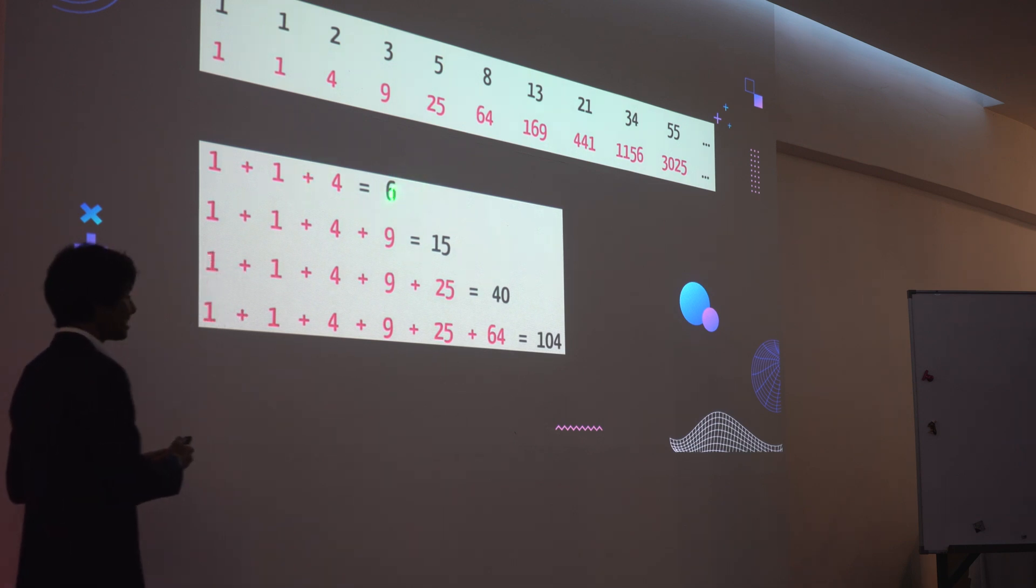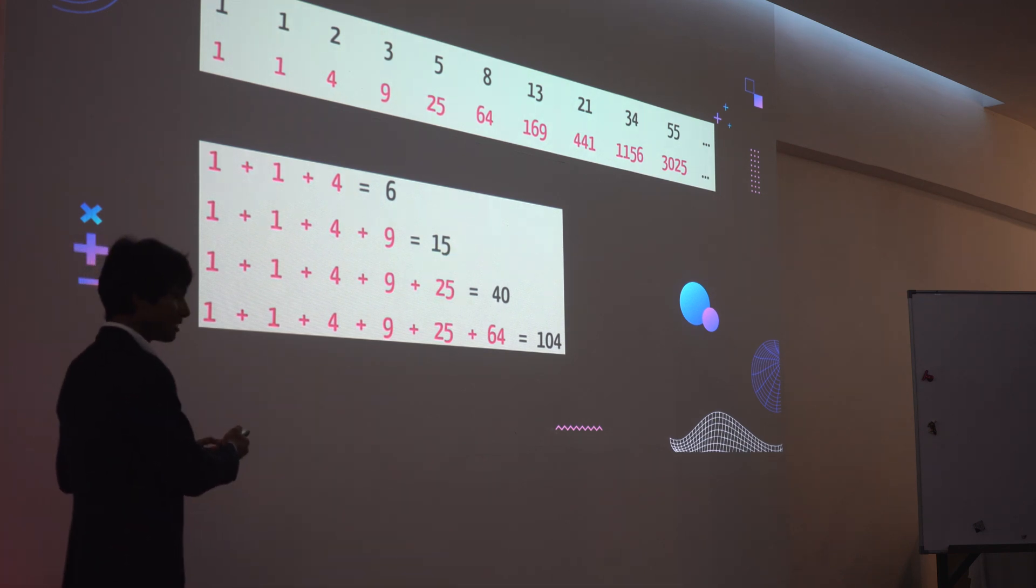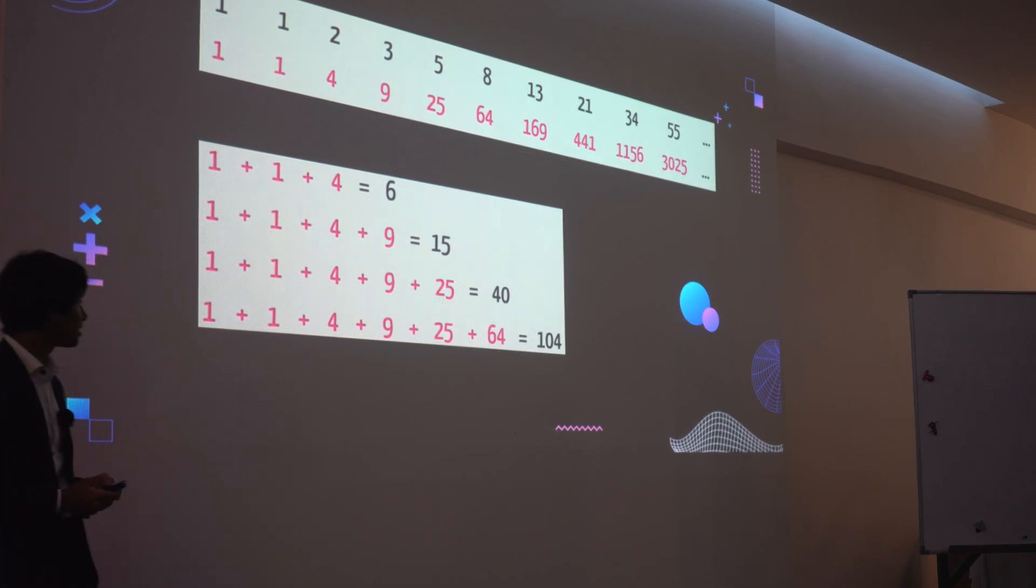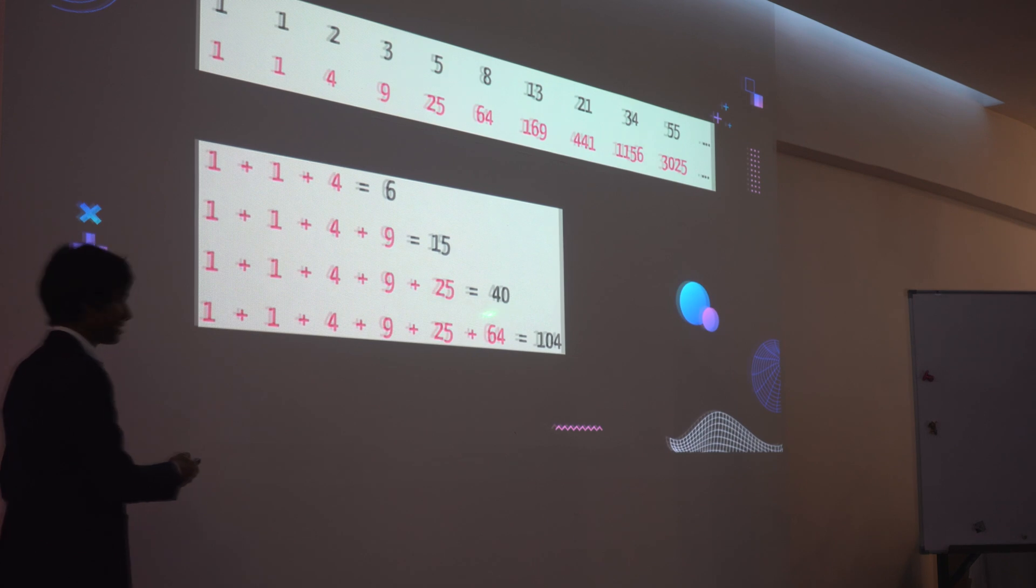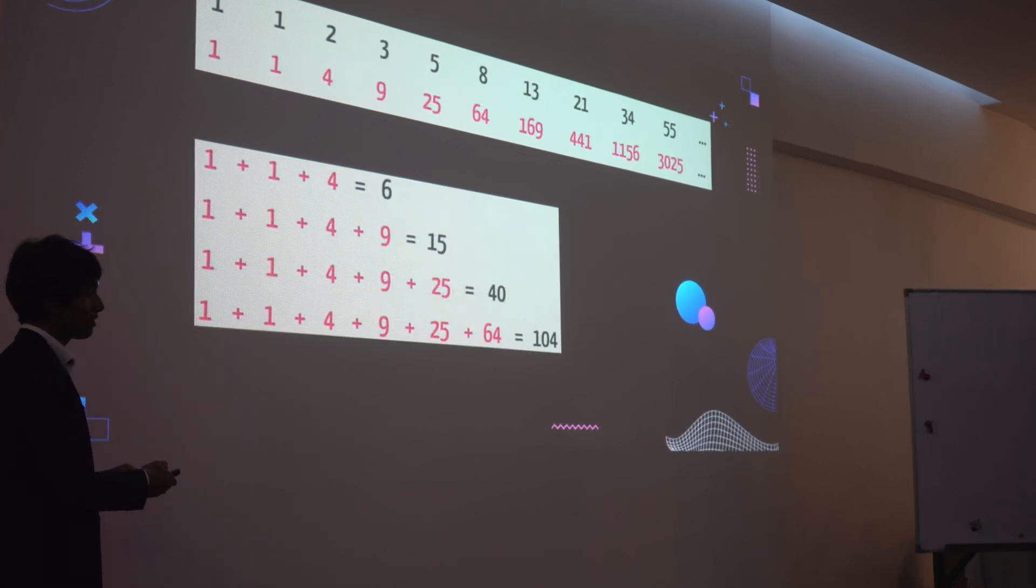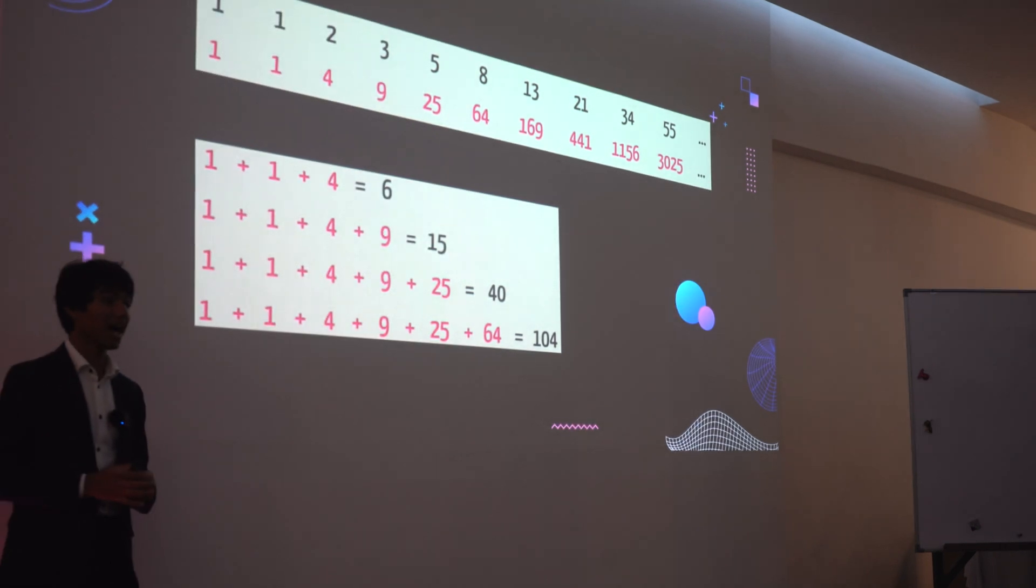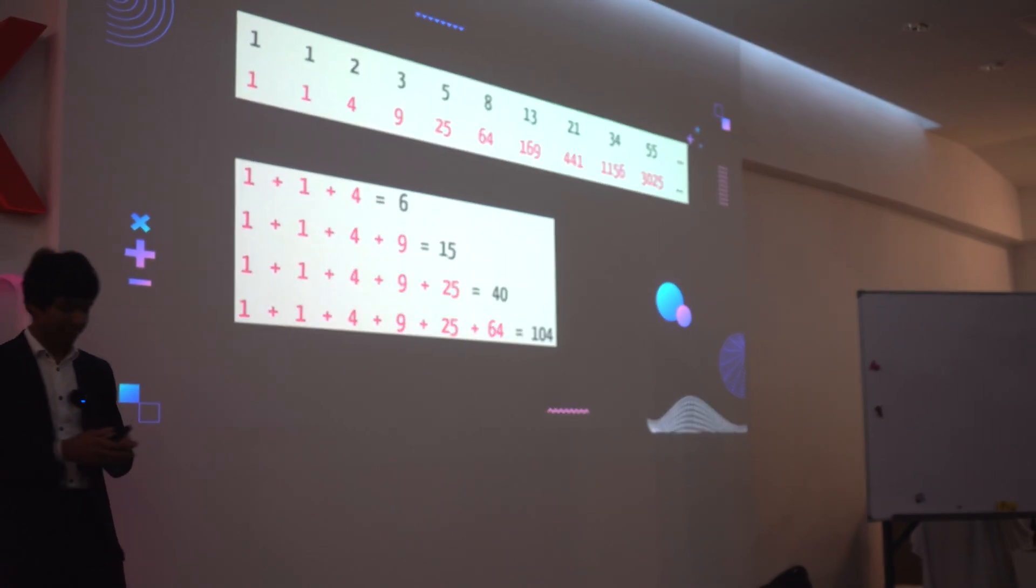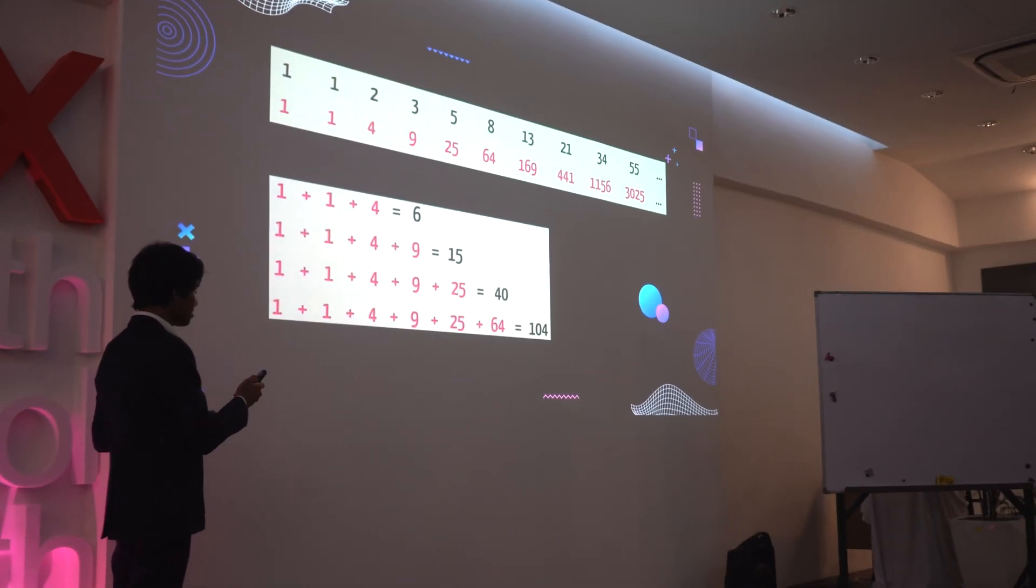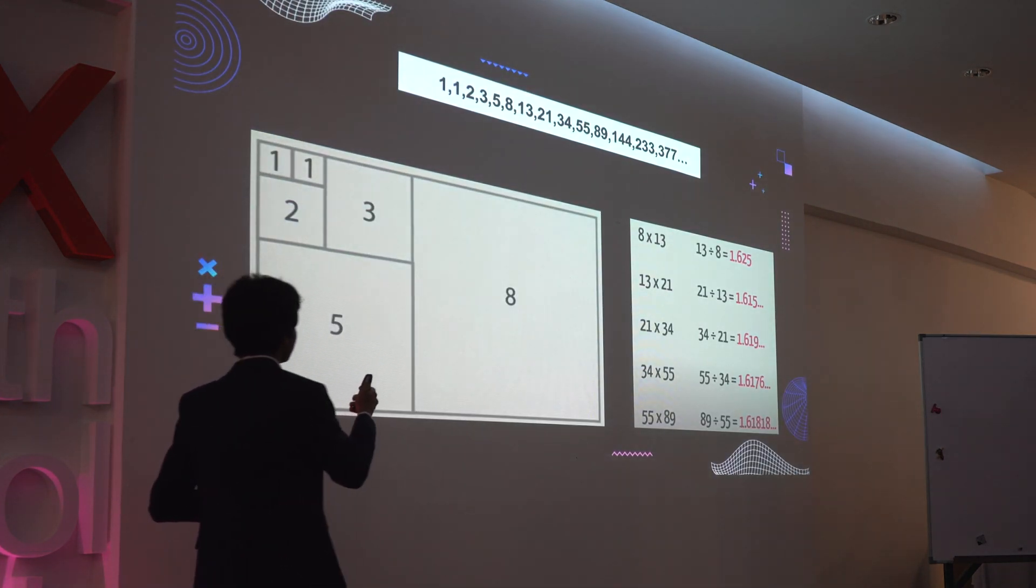Take 6. 6 would be 2 times 3, both Fibonacci numbers. Take 15. 15 would be 3 times 5, also both Fibonacci numbers. 40 is 5 times 8, and 104 is 8 times 13. If you listen to those numbers that I mentioned, I mentioned numbers 2, 3, 5, 8, and 13. Now, with 2, 3, 5, 8, and 13, we see the Fibonacci sequence.